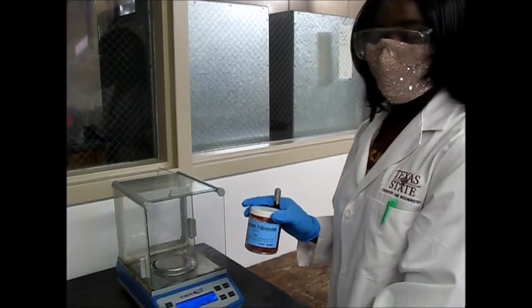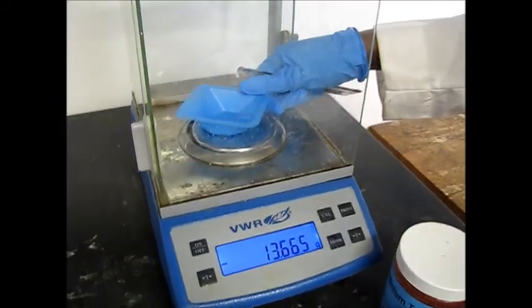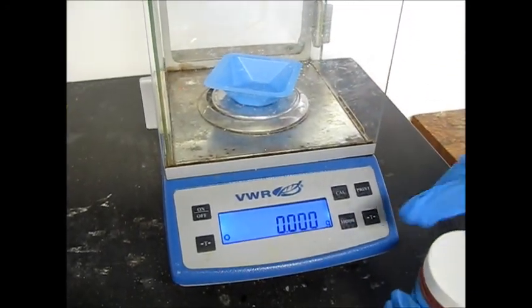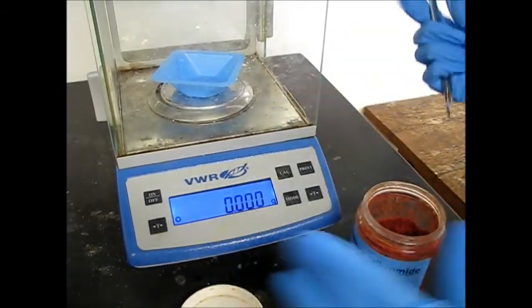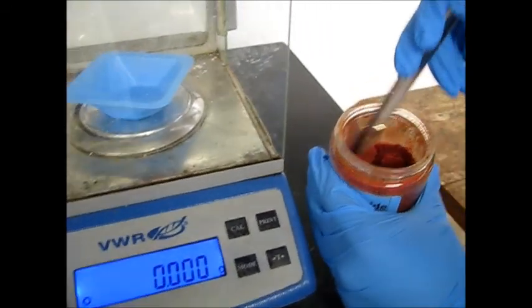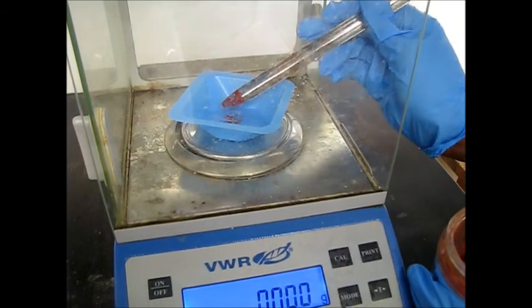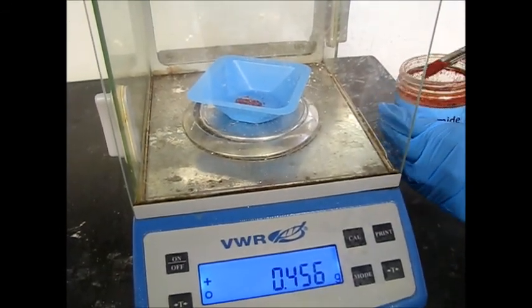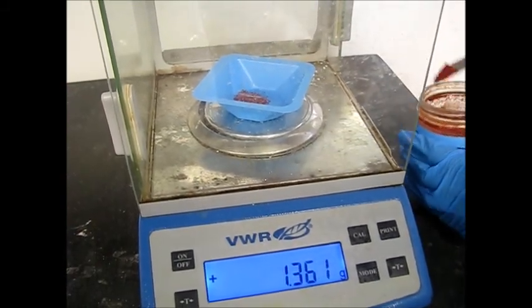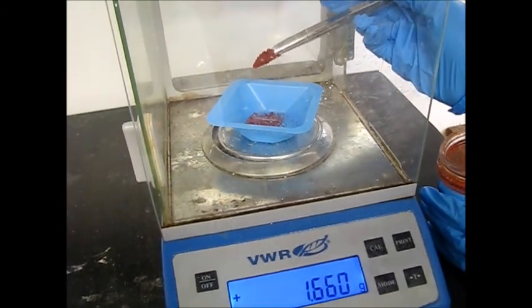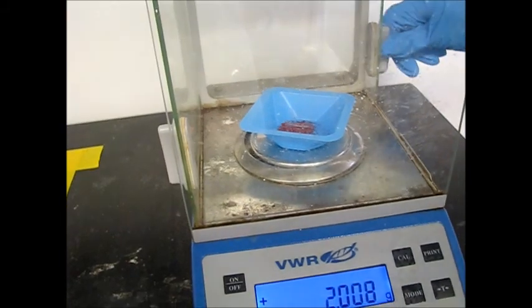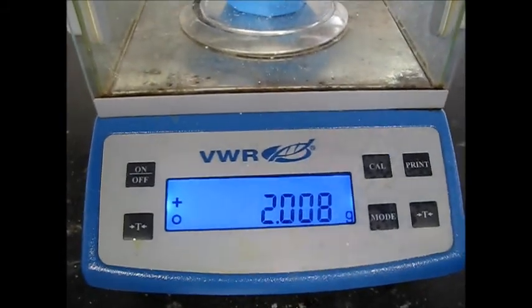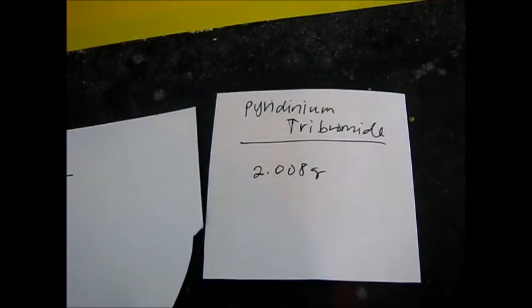Next we're going to weigh out our pyridinium tribromide. Going to get my weigh boat, put it on the scale, zero it out. I'm going to get my correct spatula. This is red. I'm getting two grams. 2.008 grams. So here we note down the stilbene 1.064 grams and pyridinium tribromide 2.008 grams.